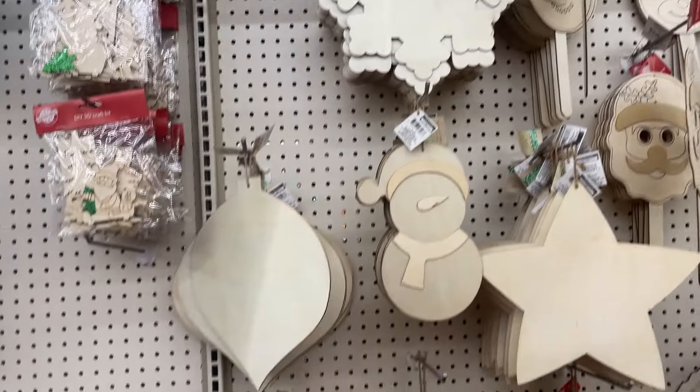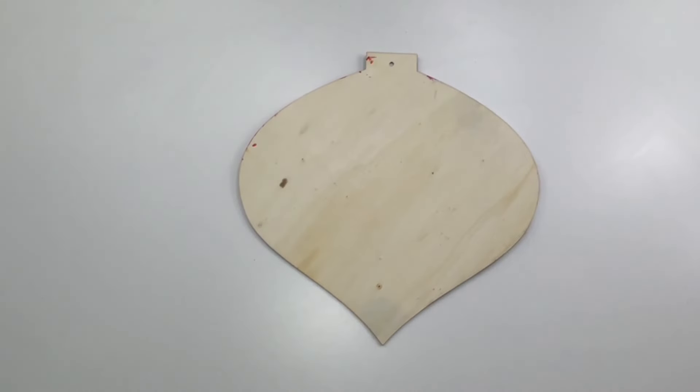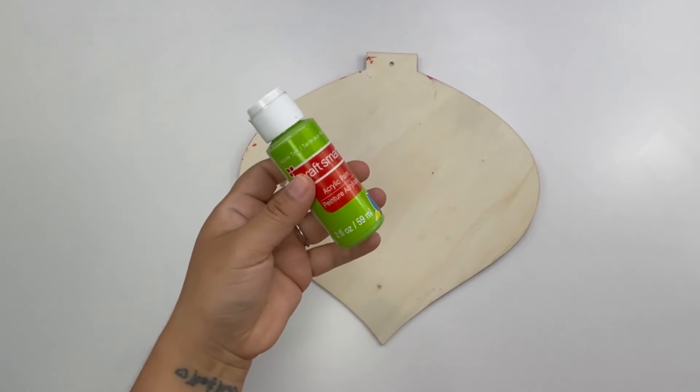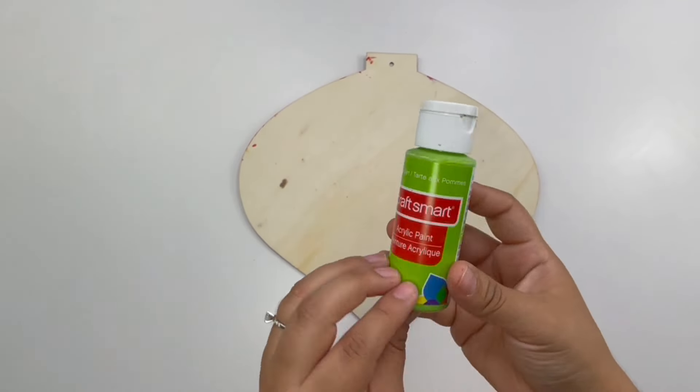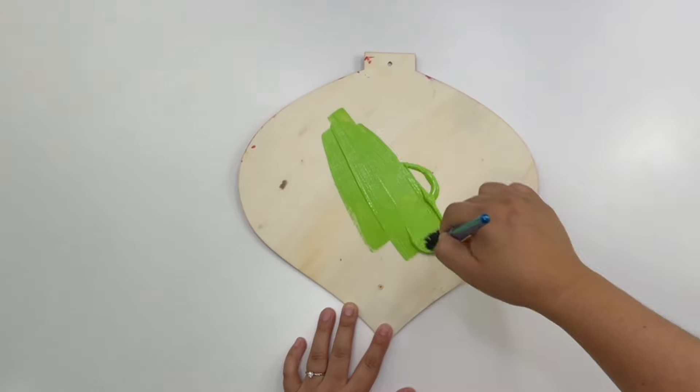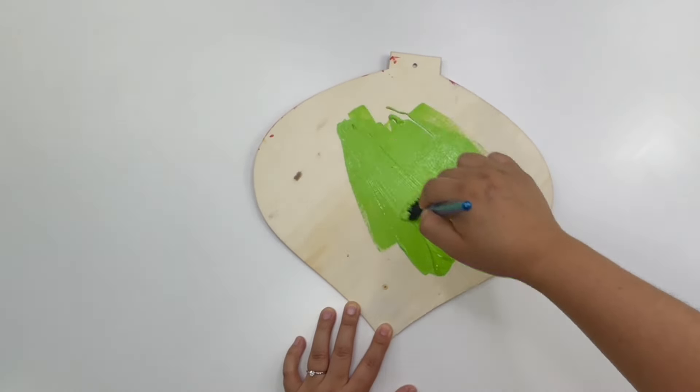For my first project I will be using one of these large wood ornaments that I got from the Dollar Tree. The first thing I'm going to do is paint this using this green. This is from the brand Craftsman and it's in the color Apple Tart. I feel like this was the perfect Grinch color.